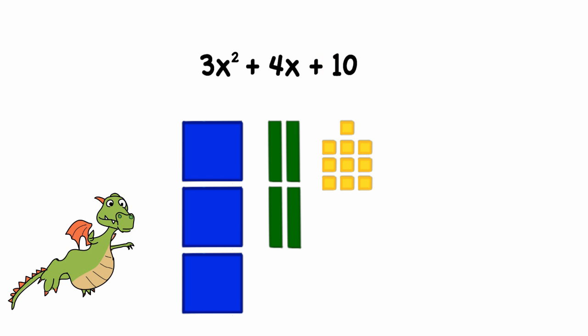So now we can put all this together. And the expression 3x² + 4x + 10 describes the combined area of this family of shapes for any value of x that we might pick.